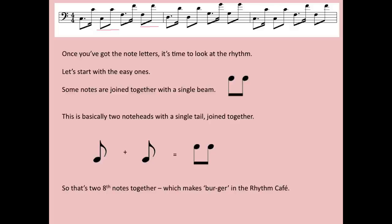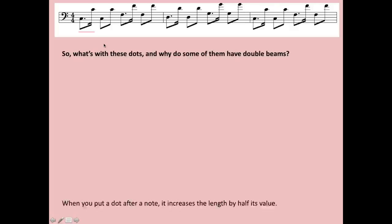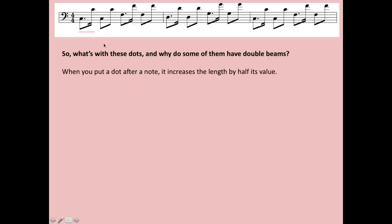So what's with these dots, and why do some of them have these double beams? These are notes I'm talking about here. Let me get the pen, so that's one for example. There's a dot here and there's a double beam here. What does that mean? Well let me tell you: when you put a dot after the note, it increases the length of that note by half its own value.